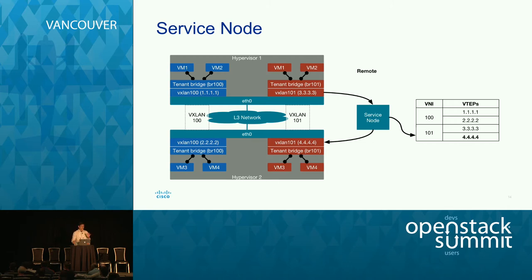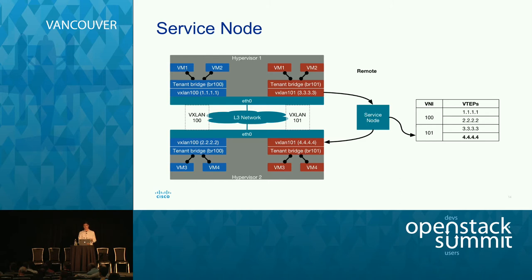Here's a high-level example of how the service node works. If we have traffic going from VM2 to VM4, none of the red VMs on Hypervisor 1 or Hypervisor 2 know about each other initially. VM2 sends its packet out under the bridge to VTEP VXLAN101. That VTEP doesn't have the destination in its forwarding database, so an ARP request — which is a broadcast packet — comes in. VXLAN101 sends it to the service node. The service node looks up VNI 101, sees two VTEPs 3333 and 4444, and since the packet came from 3333, it forwards it to 4444, where it's decapsulated and VM4 picks it up.